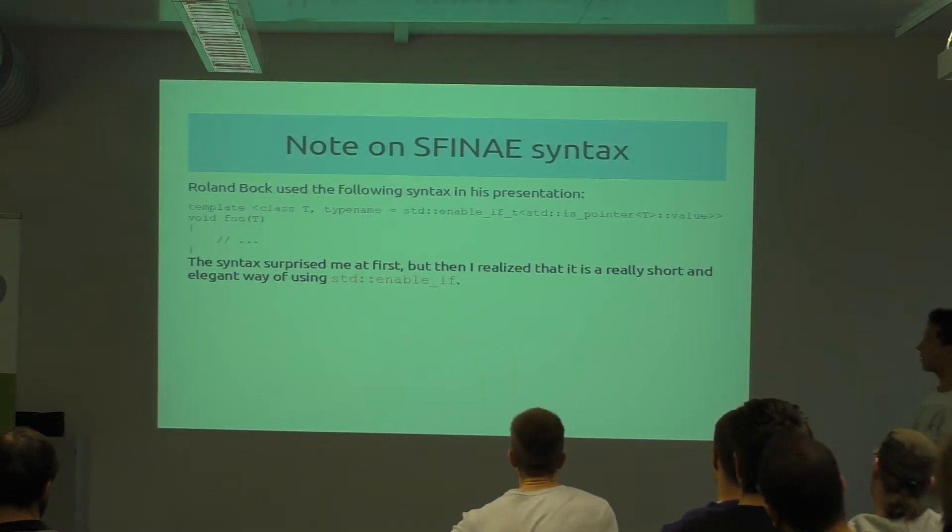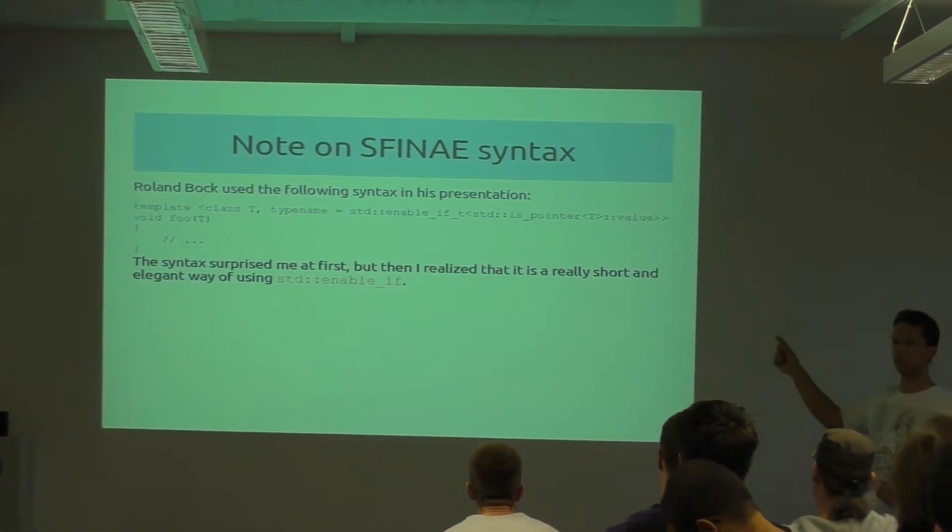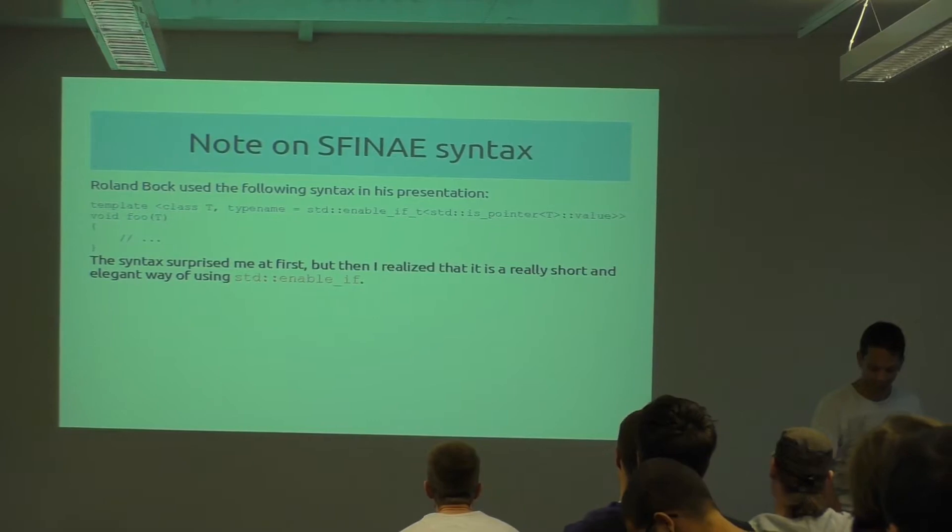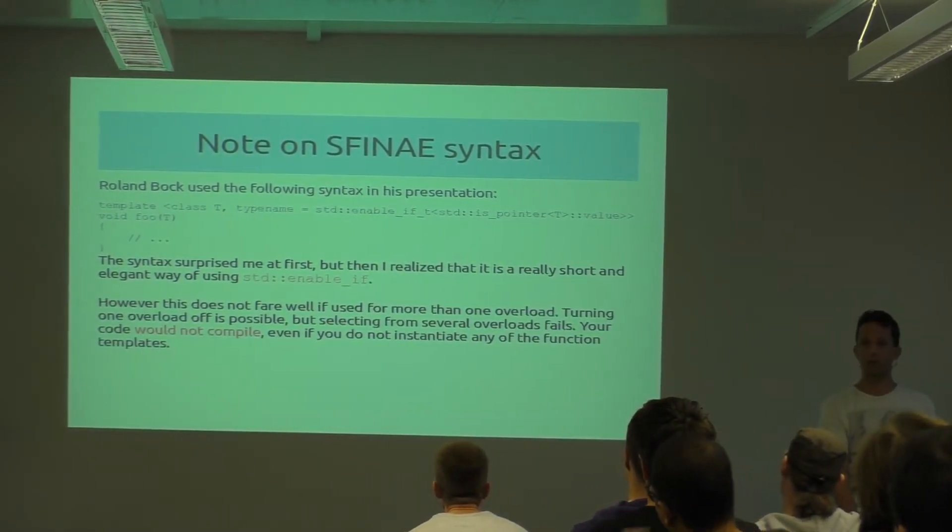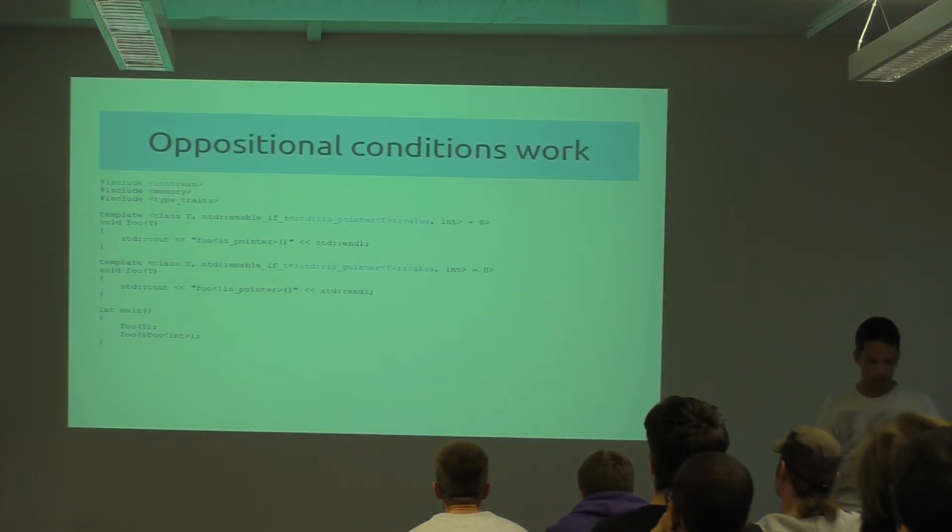A little note on the syntax: Roland used a lot of this syntax to use std::enable_if. This does not work so well if you use more than one overload with this technique, because the default type is not part of the signature. So if you use it, basically your code will not compile, no matter if you instantiate the function or not.